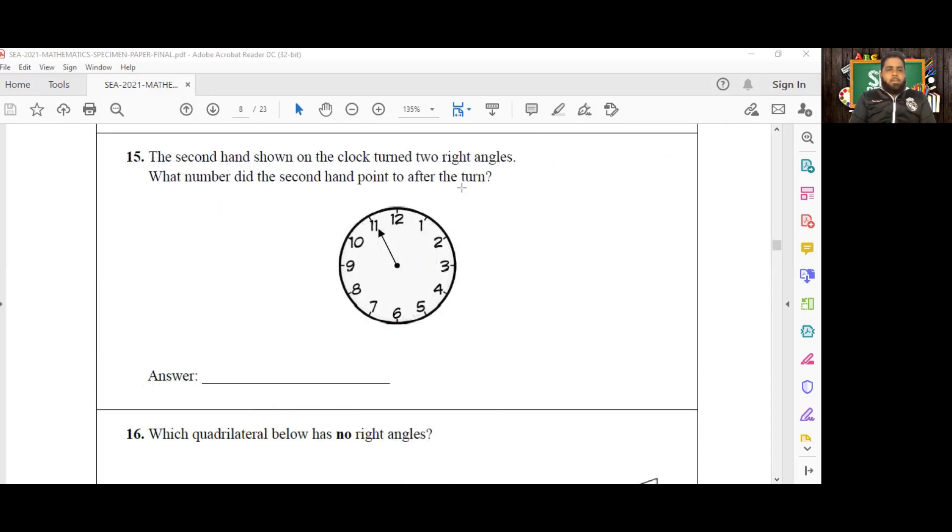Okay, so here we are now at number 15. The second hand shown on the clock turned two right angles. What number did the second hand point to after the turn?